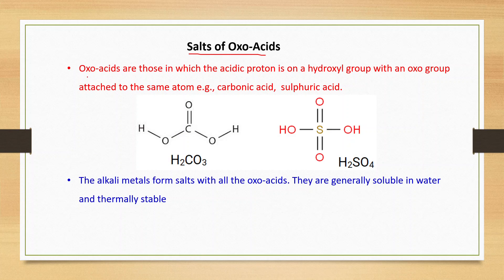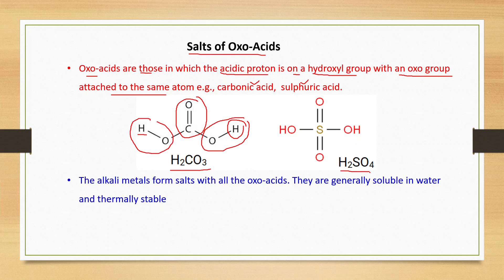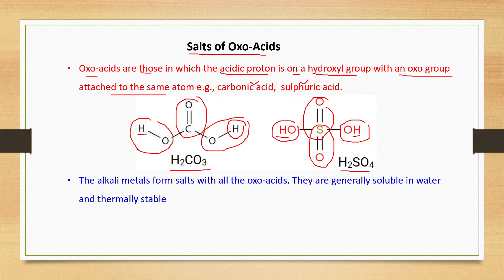Now, salts of oxoacids. Oxoacids are those in which the acidic proton is on a hydroxyl group with an oxo group attached to the same atom. For example, carbonic acid H₂CO₃ has an oxo group and an acidic proton as part of a hydroxyl group. Similarly, sulfuric acid H₂SO₄ has oxo groups and acidic protons each as part of an OH group. These are examples of oxoacids.